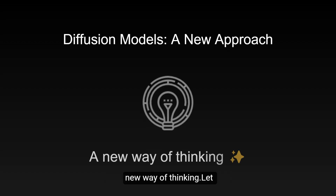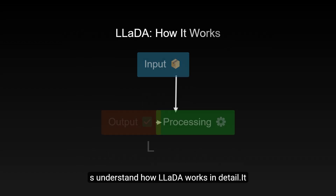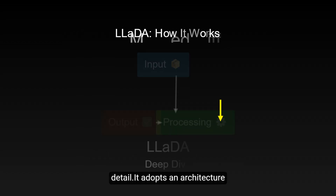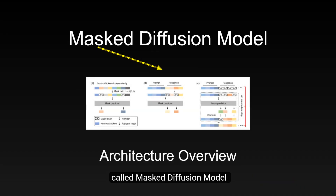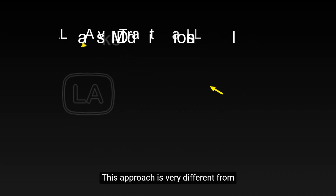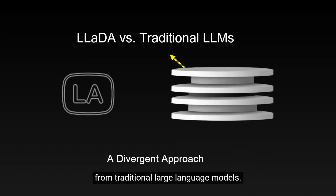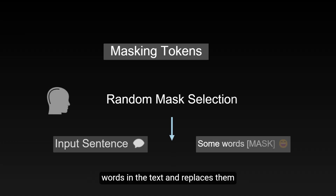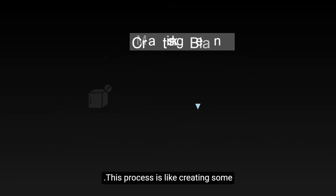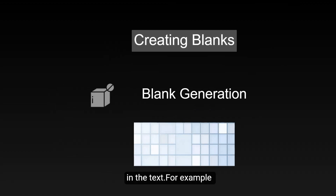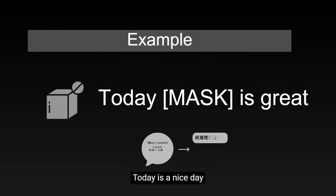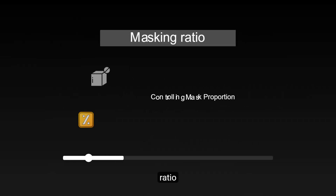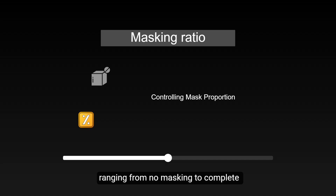Diffusion models provide a new way of thinking. Let's understand how LIDA works in detail. It adopts an architecture called the mask diffusion model, which is very different from traditional large language models. During the forward process, the model randomly selects some words in the text and replaces them with special mask tokens. This process is like creating blanks in the text — for example, 'today is a nice day' might become 'today is [mask] nice.' The model controls the masking ratio, ranging from no masking to complete masking.